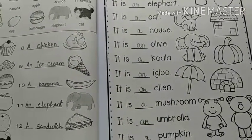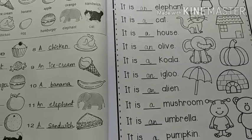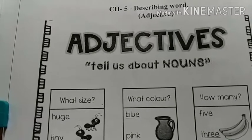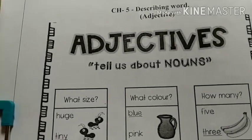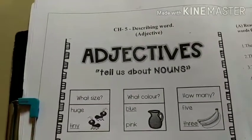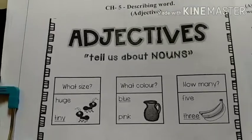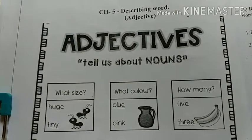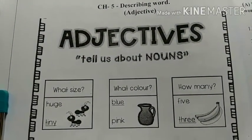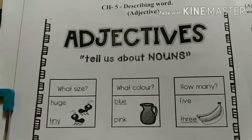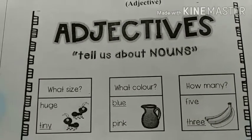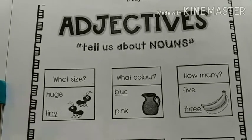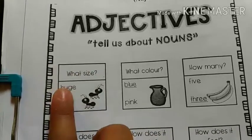Now come to the fifth chapter - Adjectives. Take out page number 30 - describing words. Let's start our adjective chapter. Adjectives tell us about nouns - they tell us more about naming words. What's the size? Huge or tiny? What's the color? Blue or pink? How many? Five or three? How does it look? Dull or lovely?